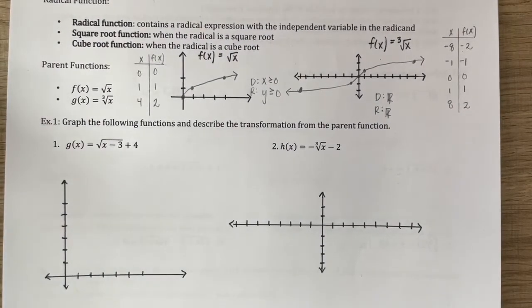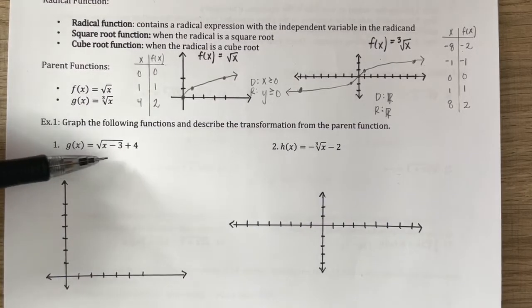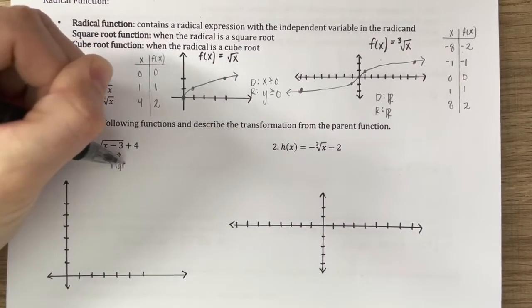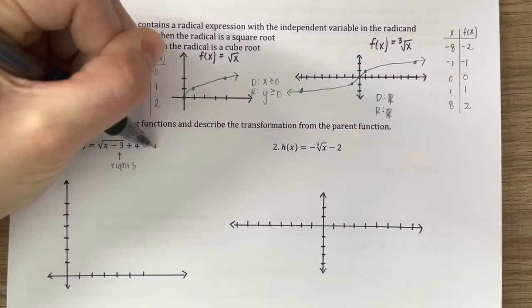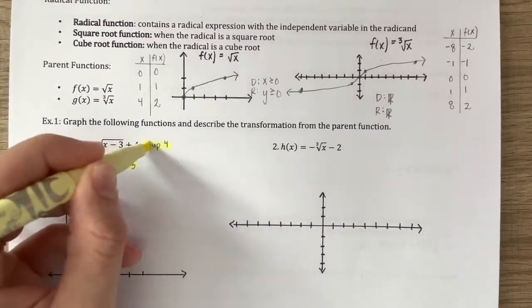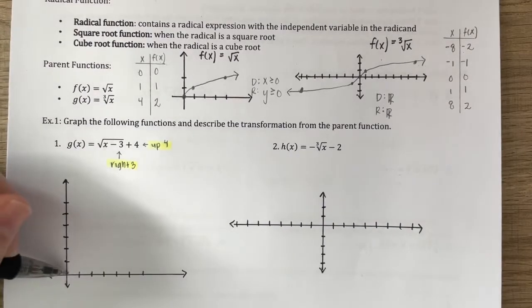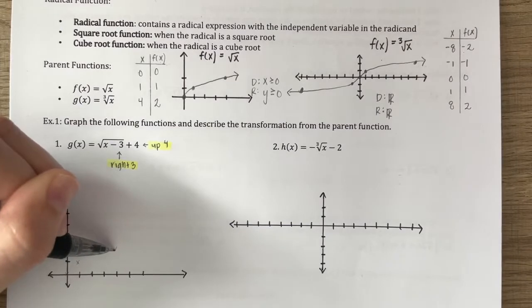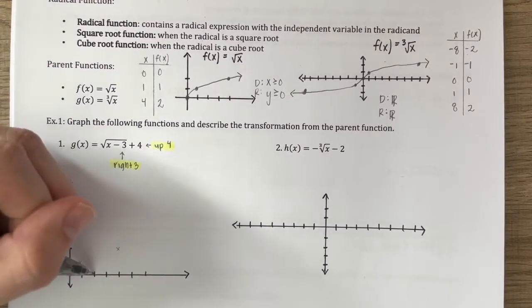For example one, we graph the following functions and describe the transformation from the parent function. Transformations work the same way as they have all year. For number one, g(x) equals the square root of (x minus 3) plus 4: the minus 3 inside the radical means shift right 3, and the plus 4 outside means shift up 4. My parent function points were (0, 0), (1, 1), and (4, 2), and I count 3 right and 4 up for each — so (0, 0) ends up at (3, 4).